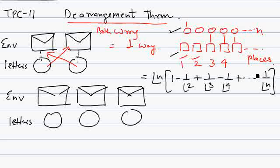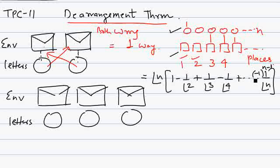If you want to determine the sign of the last term, you can say it is (-1) to the power n. If n is even, then the sign is minus. But you don't really need to remember this because you just alternate plus and minus signs throughout.